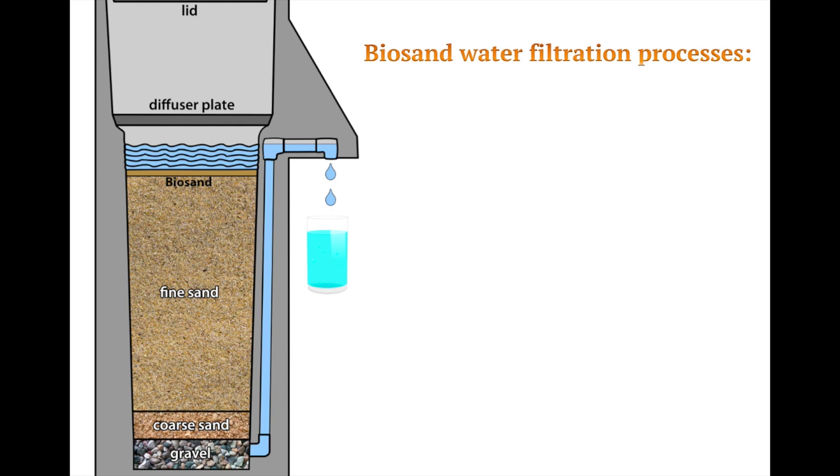When the water passes down through the biosand and fine sand layers, there are four processes which eliminate the pathogens. Pathogen elimination occurs mostly by the microorganisms in the biosand layer that prey on the pathogens. This process is called predation. This mainly occurs at the uppermost layer.